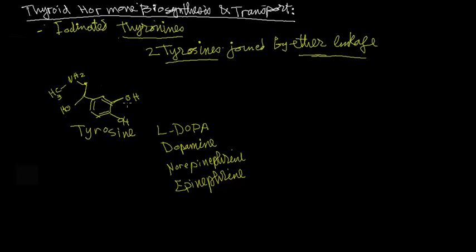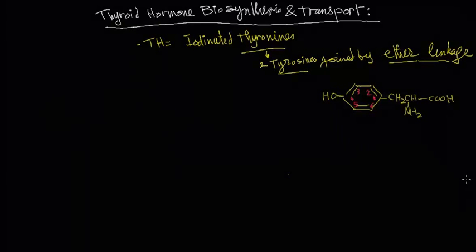In addition to the thyroid hormone. Back to our main subject, thyroid hormone biosynthesis and transport. So as we mentioned, tyrosine is the building block of thyroid hormone, and this is the structure of tyrosine.